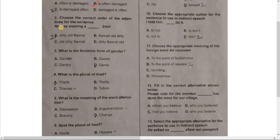Number 2. Choose the correct order of the adjective for the sentence. He was wearing dirty old flannel. Flannel old dirty. Old dirty flannel. Dirty flannel old. He was wearing A.